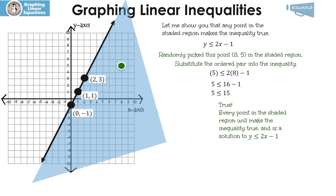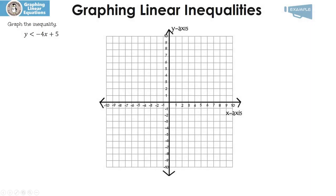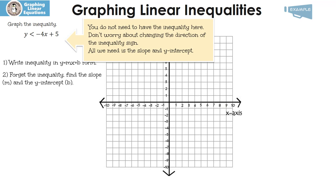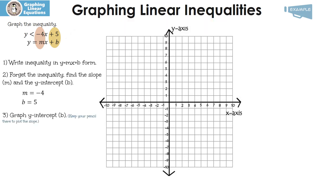Let's look at another example. Graph the inequality y is less than or equal to negative 4x plus 5. First we're going to write the inequality in y equals mx plus b form — which it already is. Now we're going to forget the inequality and find the slope and the y-intercept. We write y equals mx plus b underneath it: negative 4 is m, which is my slope, and 5 is b, my y-intercept.